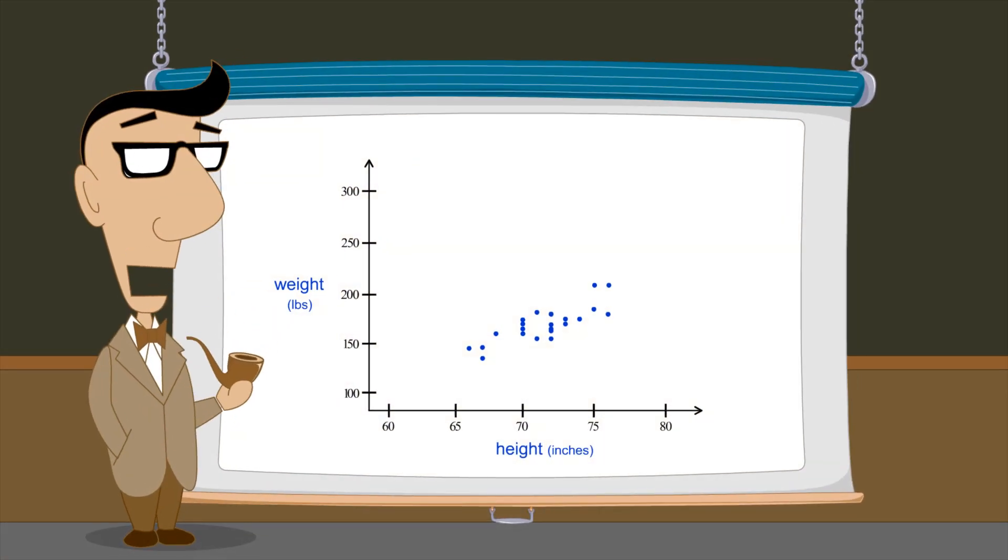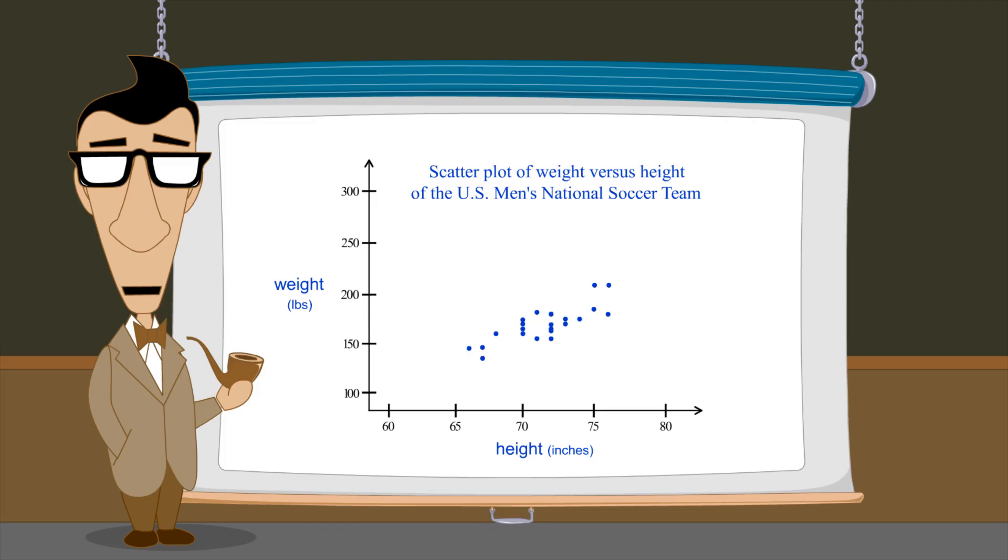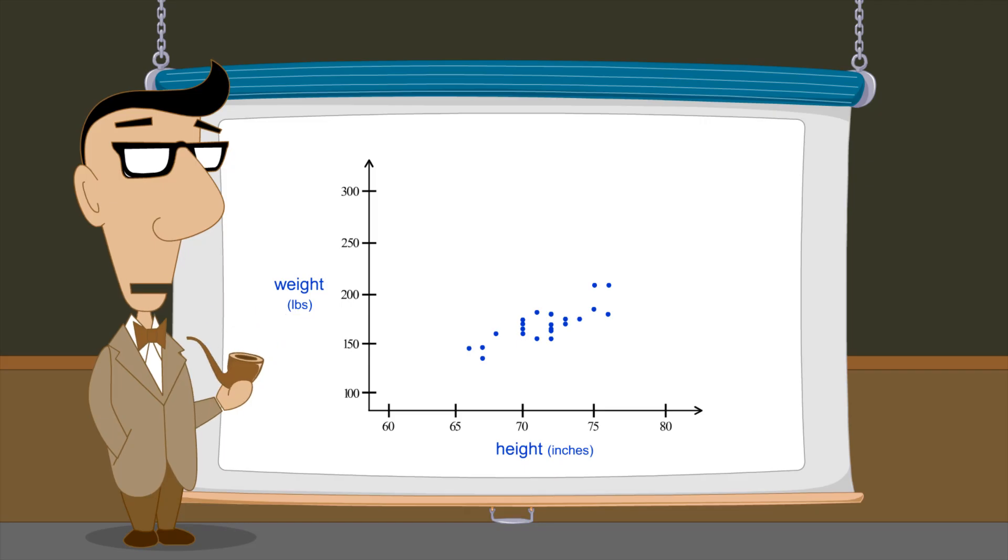Graphs of finite sets of ordered pairs are called scatter plots. Scatter plots allow us to visually detect patterns which may exist in a relation between two quantities. For example, in this scatter plot, it is apparent that as a general trend, the weight of a player increases as the height increases.